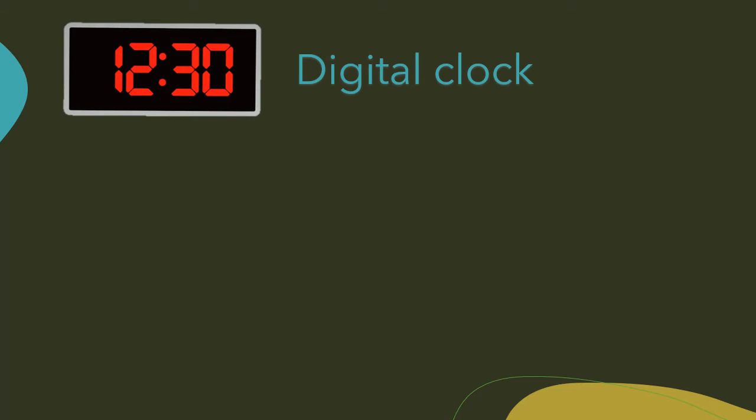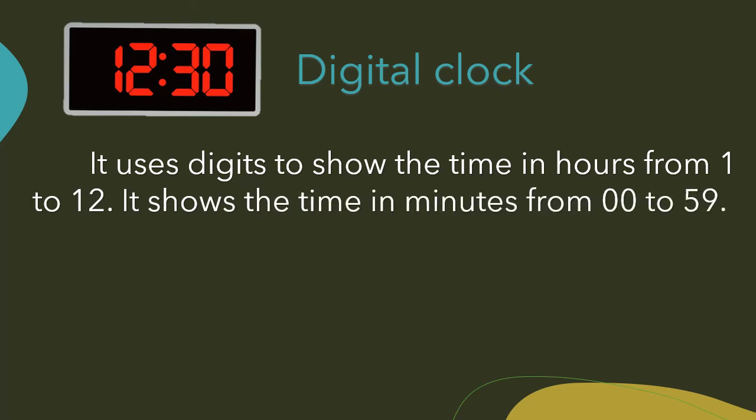Another one is the use of digital clock. It uses digits to show the time in hours from 1 to 12. It shows the time in minutes from 00 to 59.